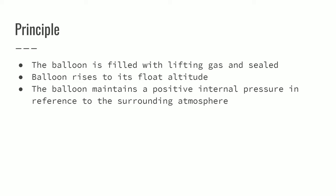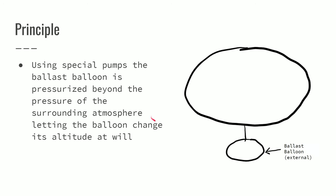So it's filled with lifting gas, goes up to its float altitude, and then it maintains a positive internal pressure in reference to the surrounding atmosphere. That's where it gets the super pressure name. And basically using very special pumps because you're pumping very low density gas, you can pressurize the ballast balloon beyond the density of the air outside or around the pressure outside. And then it will increase the overall mass of the system and you will begin to descend.